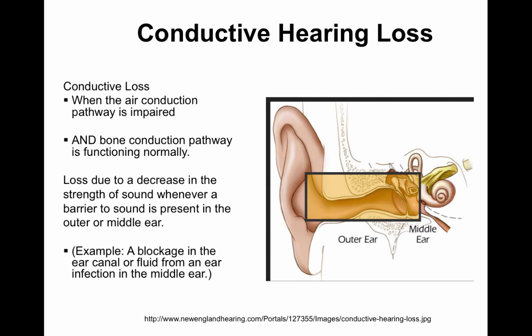Continuing where we left off, conductive hearing losses are when the air conduction pathway is impaired. That means either the outer ear or the middle ear, or somewhere in both of them, are impaired. There's a problem conducting the sound through to the inner ear, but the bone conduction pathway is functioning normally. The loss is due to a decrease in the strength of the sound whenever there is a barrier present in the outer or the middle ear.